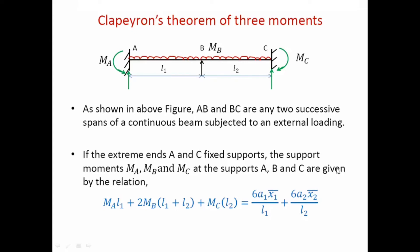The basic equation for MA, MB and MC is the equation written at the bottom in blue color: MA into L1 plus 2MB times L1 plus L2 plus MC into L2 equals 6 times a1 into x1 bar divided by L1 plus 6 a2 into x2 bar upon L2.